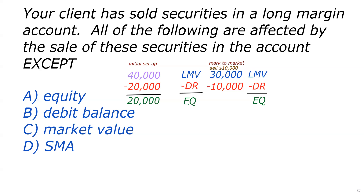So please note: the market value went down by the same amount as the debit. We had $20,000 in equity and we still have $20,000 in equity. That is the answer to the question.